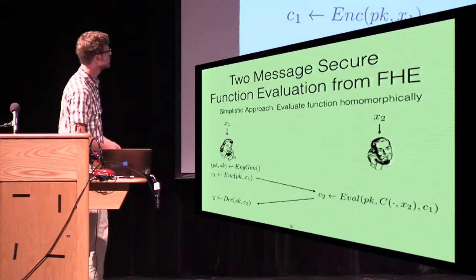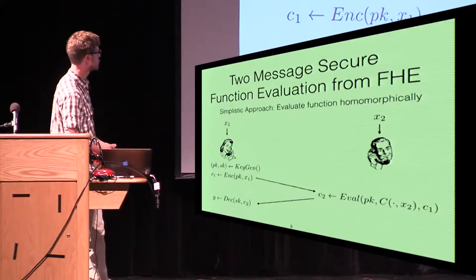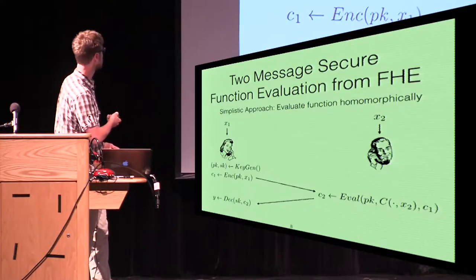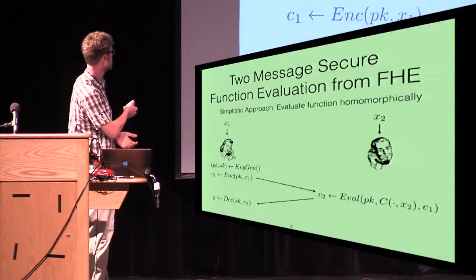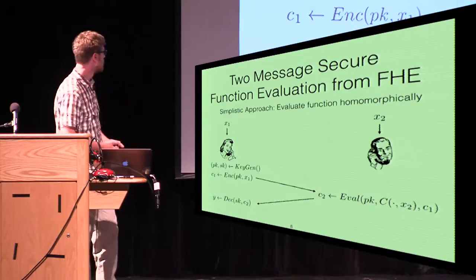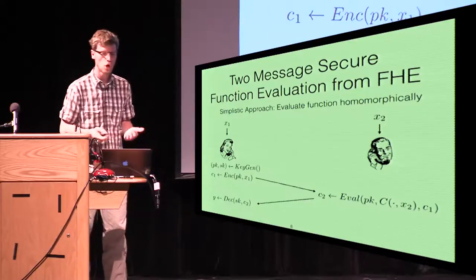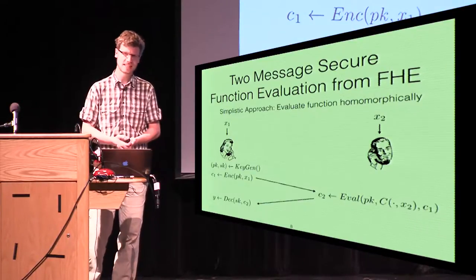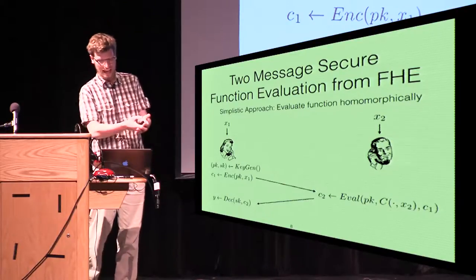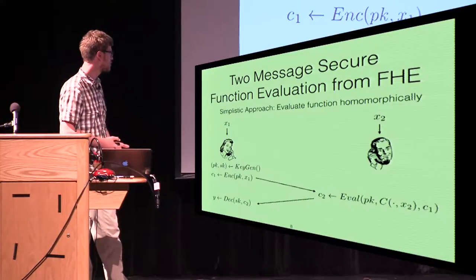Let me show you a rather general blueprint to do secure function evaluation in two rounds — a very intuitive approach based on fully homomorphic encryption. Alice has an input X1. She generates public and secret keys for a fully homomorphic encryption scheme, encrypts her message X1 under this key, and sends both the public key and the ciphertext to Bob. Bob can homomorphically evaluate a circuit C, where he hardwires his own inputs on Alice's ciphertext C1. Bob gets an output ciphertext C2, sends this back to Alice, who can use her secret key to decrypt.